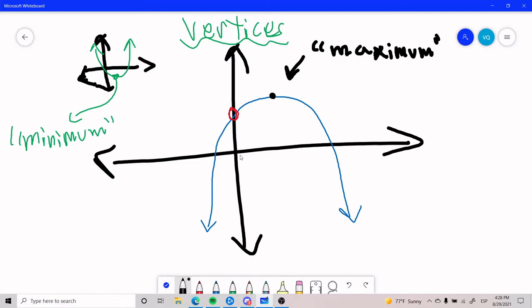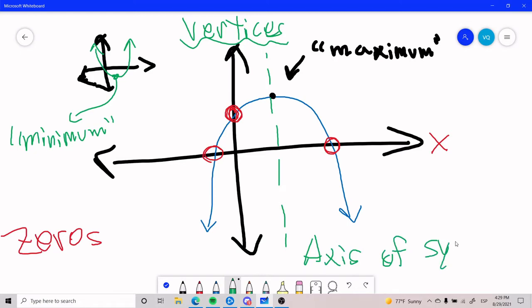The other important language is called the zeros. The zeros of a function, contrary to the y-intercept, are going to be the x-intercepts. So here would be this point here and this point here. It is also worth noting that in the vertices, we have what is called an axis of symmetry. In other words, the quadratic function is perfectly symmetrical. This is also useful for finding the zeros.